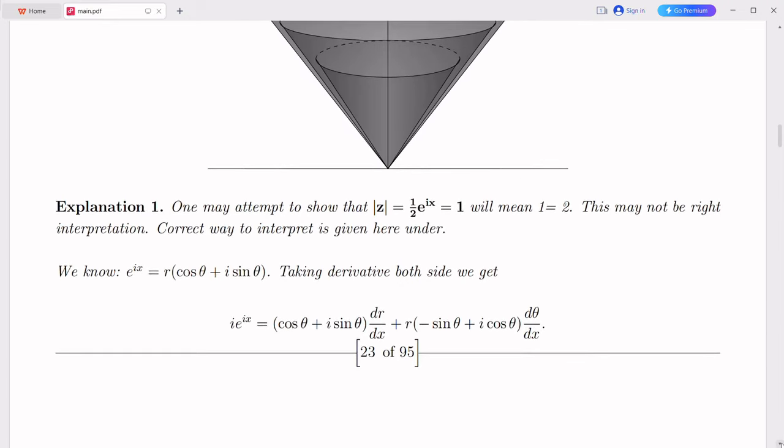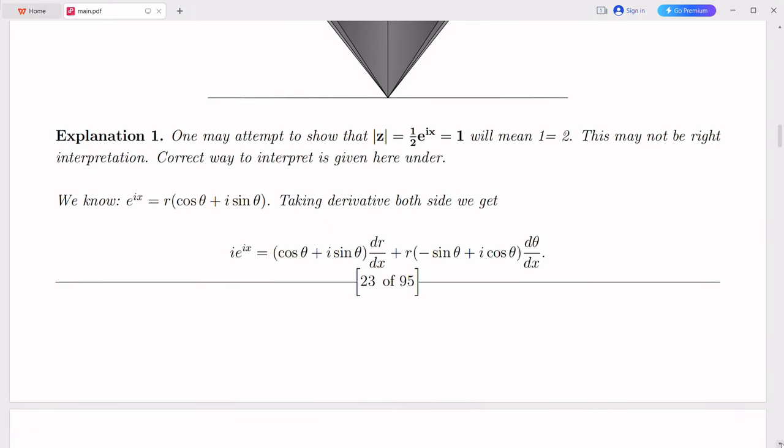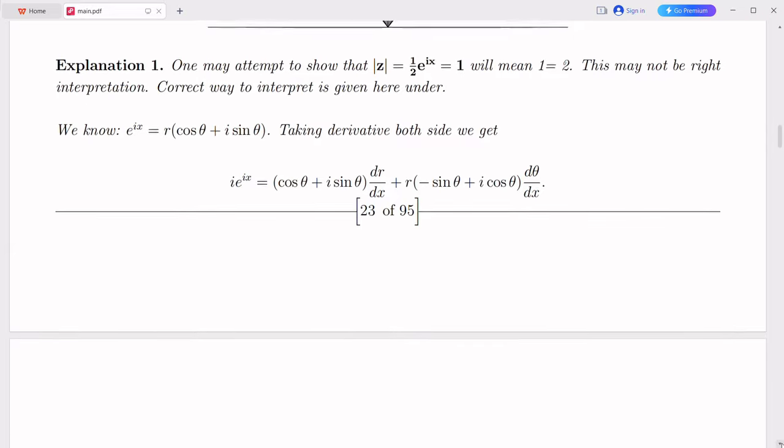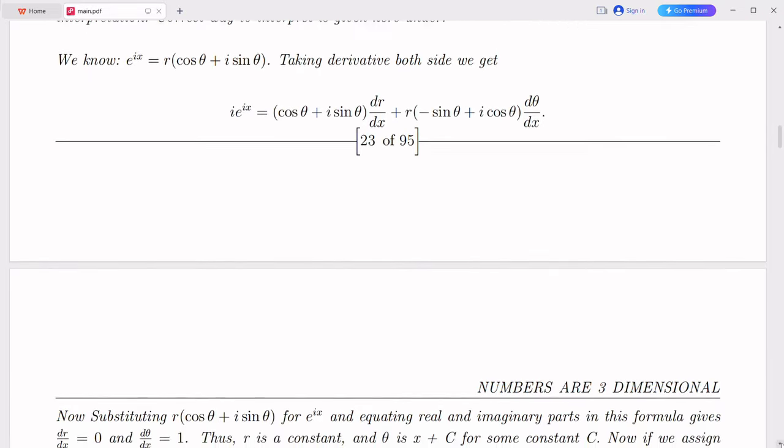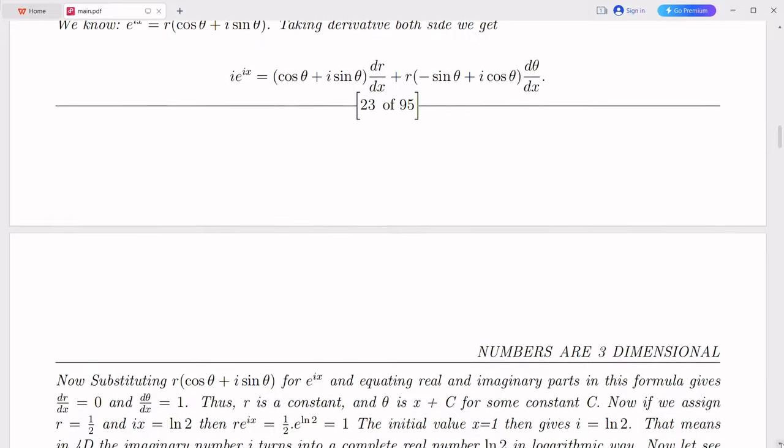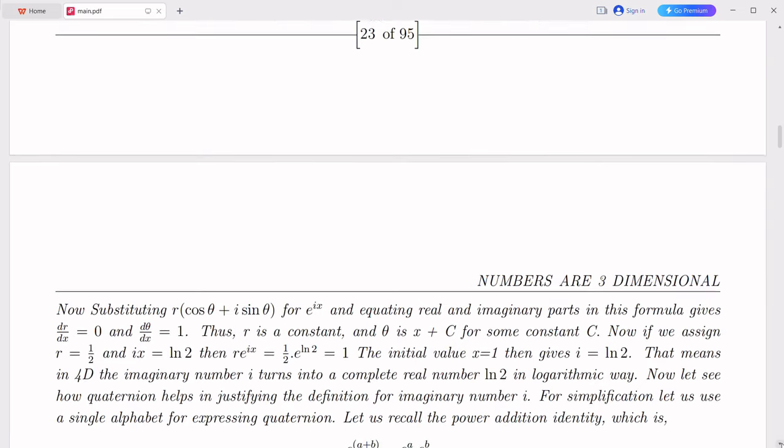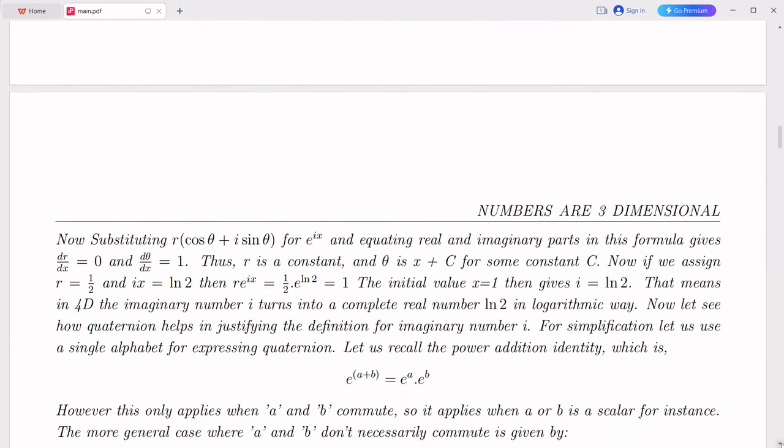let's consider the twin prime conjecture, which states that there are infinitely many prime numbers that differ by two. To approach this problem, we can utilize the prime number theorem and the dual nature of numbers. By invoking the prime number theorem and considering the asymptotic limit of prime numbers, we can show that there will always be infinitely many twin primes with a prime gap of two. This can be seen as a minimal proof for the twin prime conjecture.